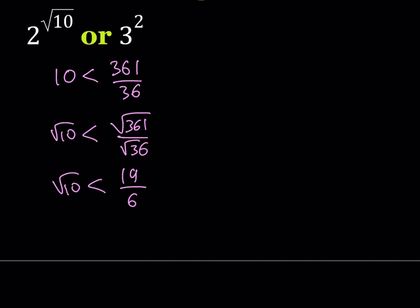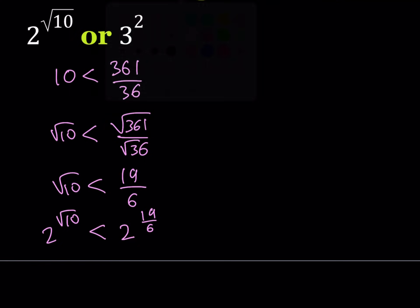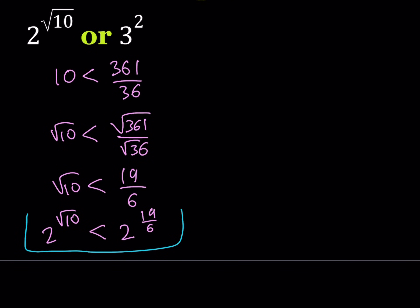My next step is going to be to use these as powers with 2 as a base. So let's go ahead and raise 2 to the power of both sides. That's going to give me 2 to the power of root 10 is less than 2 to the power of 19 over 6. Now why does this work? Because 2 as a base is greater than 1 — when you have a larger exponent you have a larger number. So we know that 2 to the power of the square root of 10 is less than 2 to the power of 19 over 6.